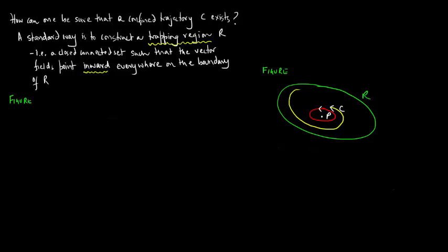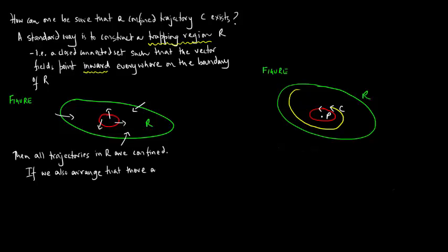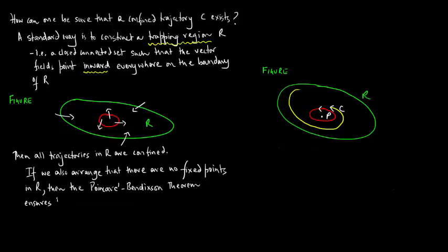Let us plot a figure to visualize this. Then, all the trajectories in R are confined. If we also arrange that there are no fixed points in R, then the Poincaré-Bendixson theorem ensures that R contains a closed orbit.